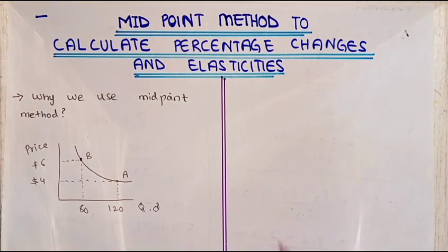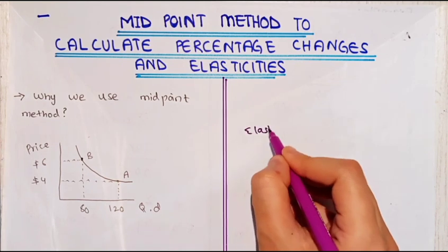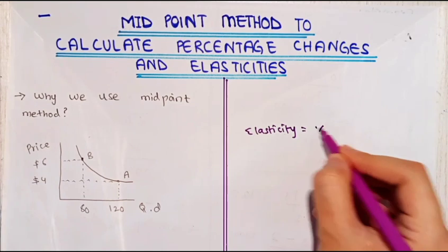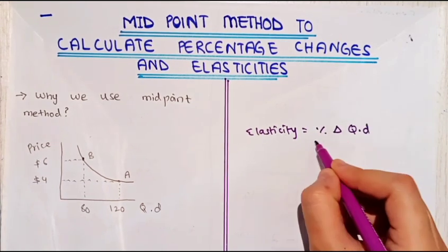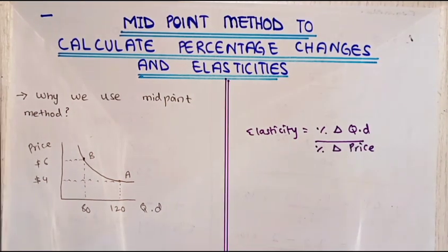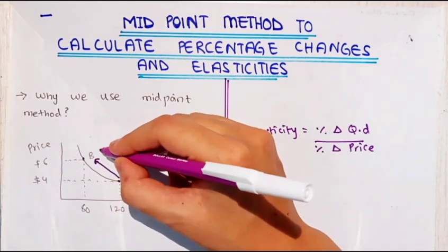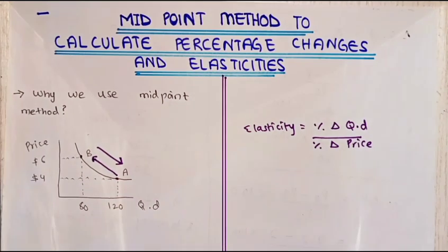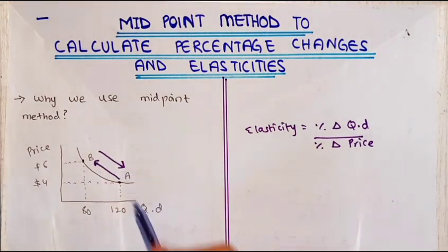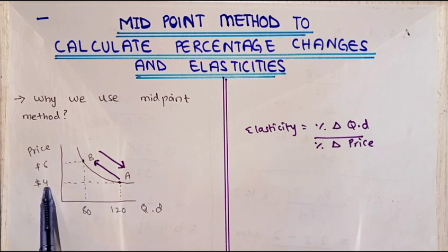Here's the important concept: when we apply the method where elasticity is computed as the percentage change in quantity demanded divided by the percentage change in price, we get a different answer when going from point A to B versus from point B to A. If we go from A to B, then Q1 will be 120, Q2 will be 80, P1 will be 4 dollars, and P2 will be 6 dollars.